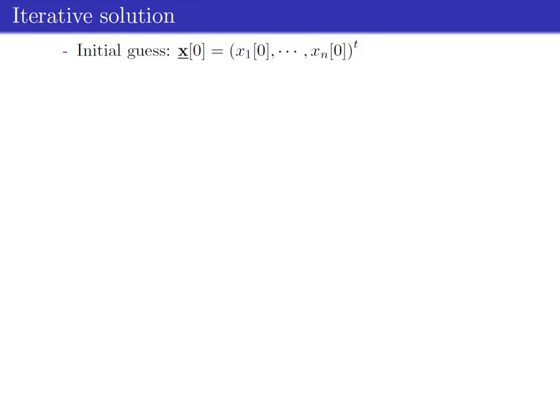Given the multivariable function f, and without assuming any a priori knowledge about the location of its minimum, we wish to devise a procedure that starts from an initial guess x, then updates this initial guess in an update direction u, weighted by a step size a, into a new value x, such that the multivariable function decreases. We repeat this process until ultimately converging to the optimum.